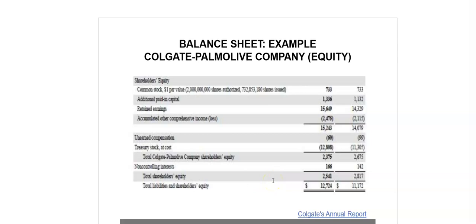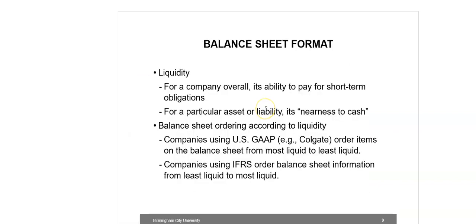The total shareholders' equity as on 31st December 2011 is $2,541 million. Liquidity refers to the ability to convert an asset into cash, or for a liability, how early it is due. There are two elements of liquidity: the speed at which an asset can be converted into cash, and the amount realized on conversion. An illiquid asset such as property can be quickly converted to cash if offered at a significantly lower price, but this would not be a good example of liquidity. In other words, liquidity refers to the nearness to cash of an asset or liability, and is generally used to refer to a company's ability to pay its short-term obligations.